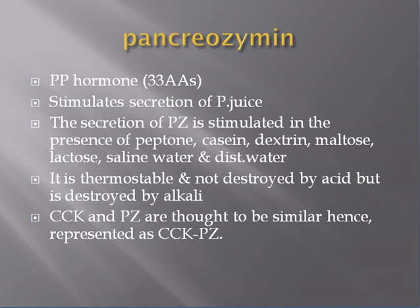Pancreozymin is a hormone formed by 33 amino acids and stimulates the secretion of pancreatic juice. The secretion of pancreozymin is stimulated in the presence of peptone, casein, dextrin, maltose, lactose, saline water, and distilled water. It is thermostable and not destroyed by acid, but it is destroyed by alkali.